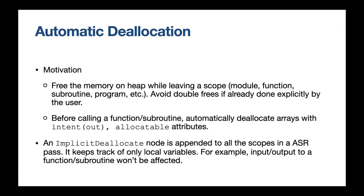We added an implicit deallocate node which appears at the end of all these scopes. It only keeps track of local variables — input/output to function subroutines won't be affected. Inside a function, the input/output will not be cleared via this implicit deallocate. Only local parts will be dealt with. That's all — thank you for listening.